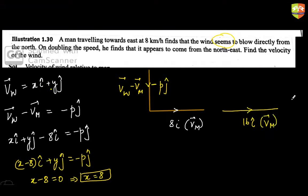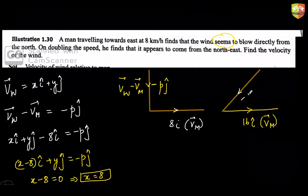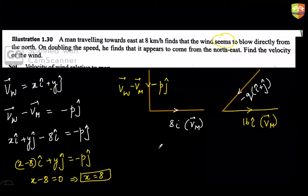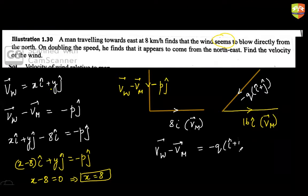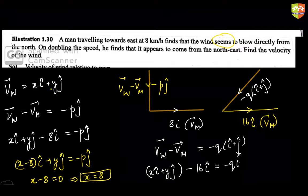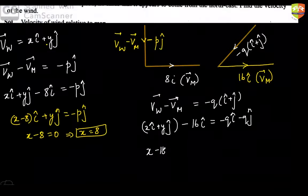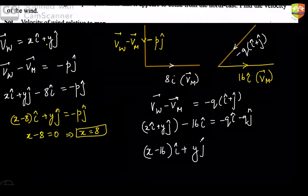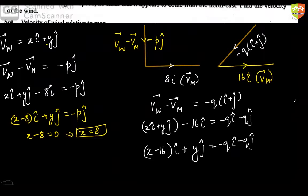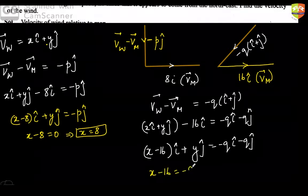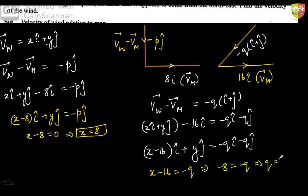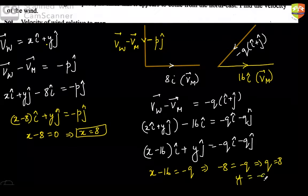In the second scenario, the man doubles his speed to 16i. The wind now appears to come from the northeast, so v_wind - v_man = -qi - qj. Setting up: (xi + yj) - 16i = -qi - qj. From the i-component: x - 16 = -q, and since x = 8, we get q = 8. From the j-component: y = -q = -8.